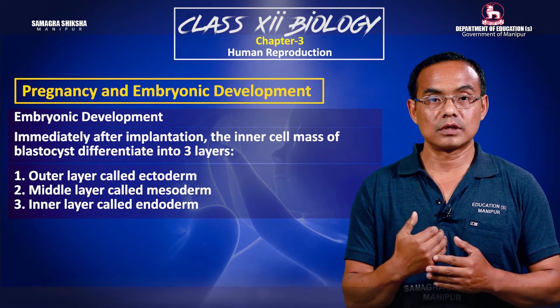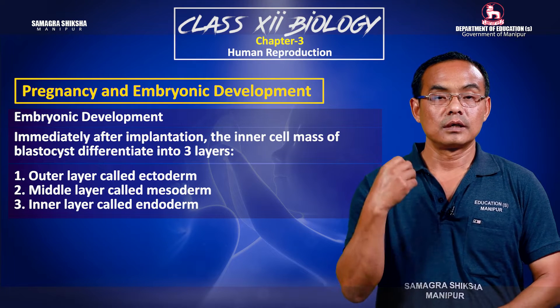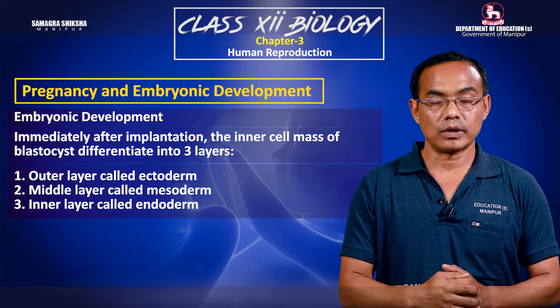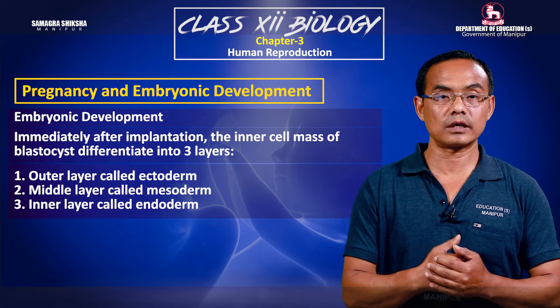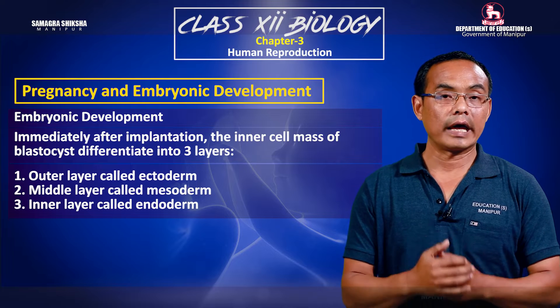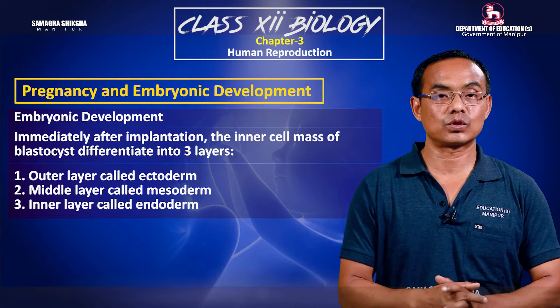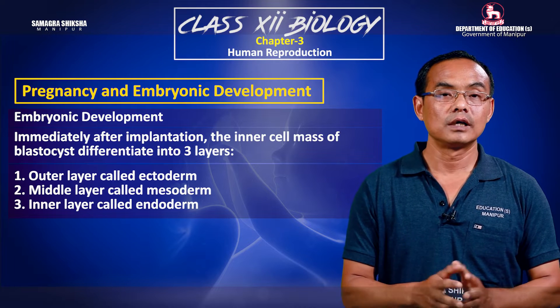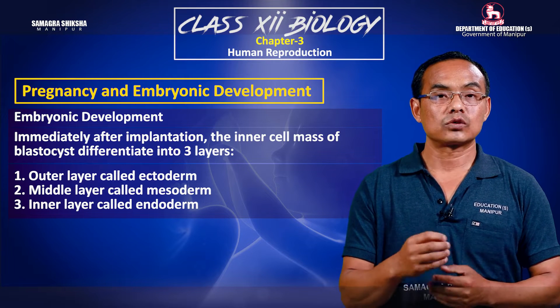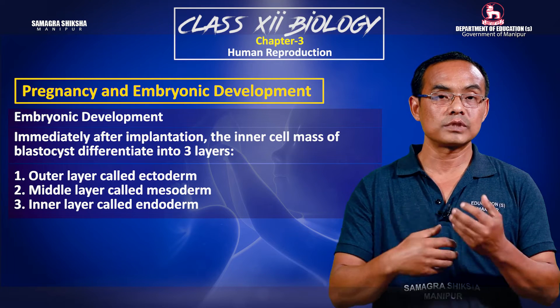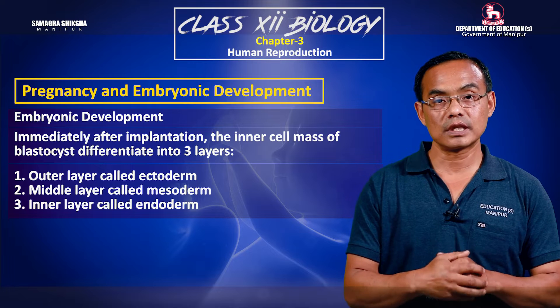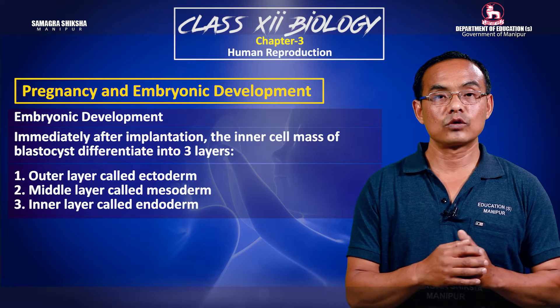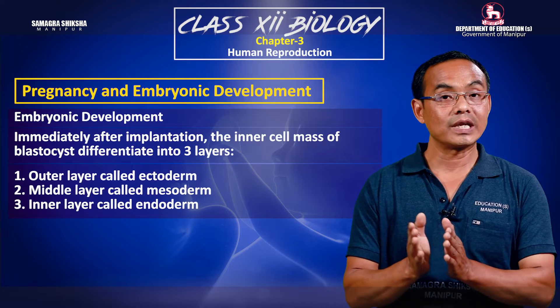The inner cell mass forms the layers of the embryo. The outer layer develops into embryonic structures. We have to understand the different tissue types that develop from these layers, including from the endoderm system.